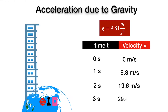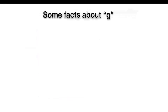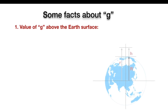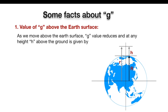Now let's see some facts about g, the acceleration due to gravity. As we move above the Earth's surface, the value of g reduces. At any height h above the ground, the value of g can be given by a formula where small r is the distance of the point from the center of the Earth. Since r = R + h, which is greater than capital R, the value of g' is less than the original value of g, which is GM/R².